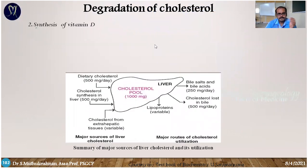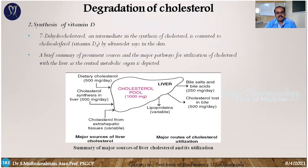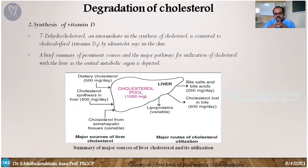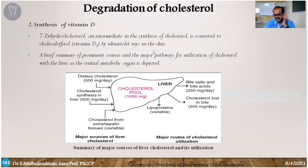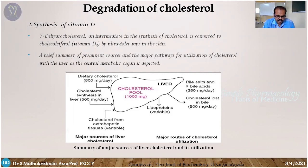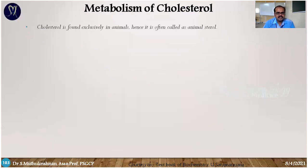The next product is synthesis of vitamin D3. Cholesterol is the basic raw material for bile, hormones, and vitamin D. The intermediate 7-dehydrocholesterol, formed during cholesterol synthesis, is converted into cholecalciferol — that is vitamin D3 — by ultraviolet rays in the skin. The skin is thus a major site for synthesizing vitamin D3 from sunlight.